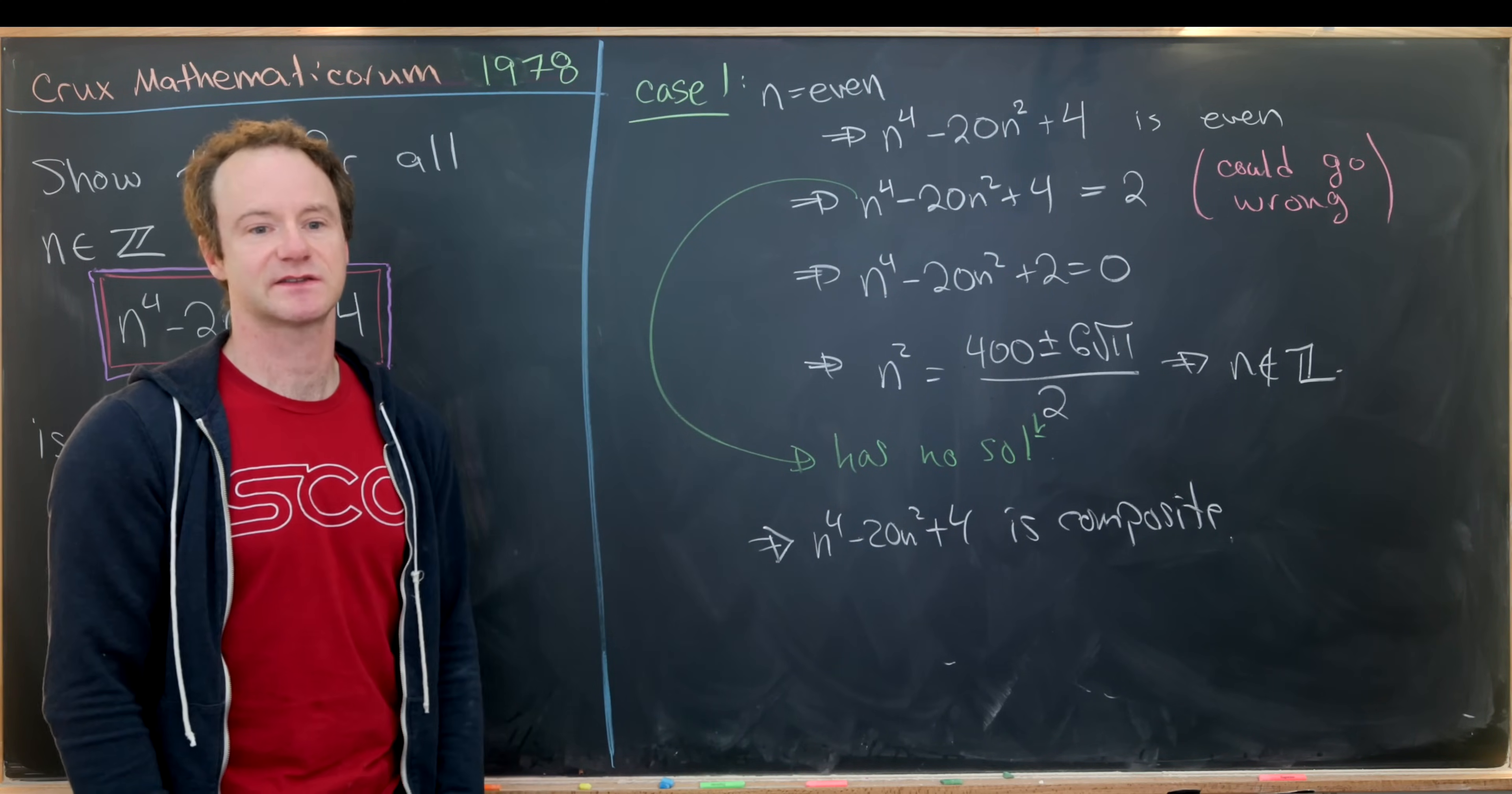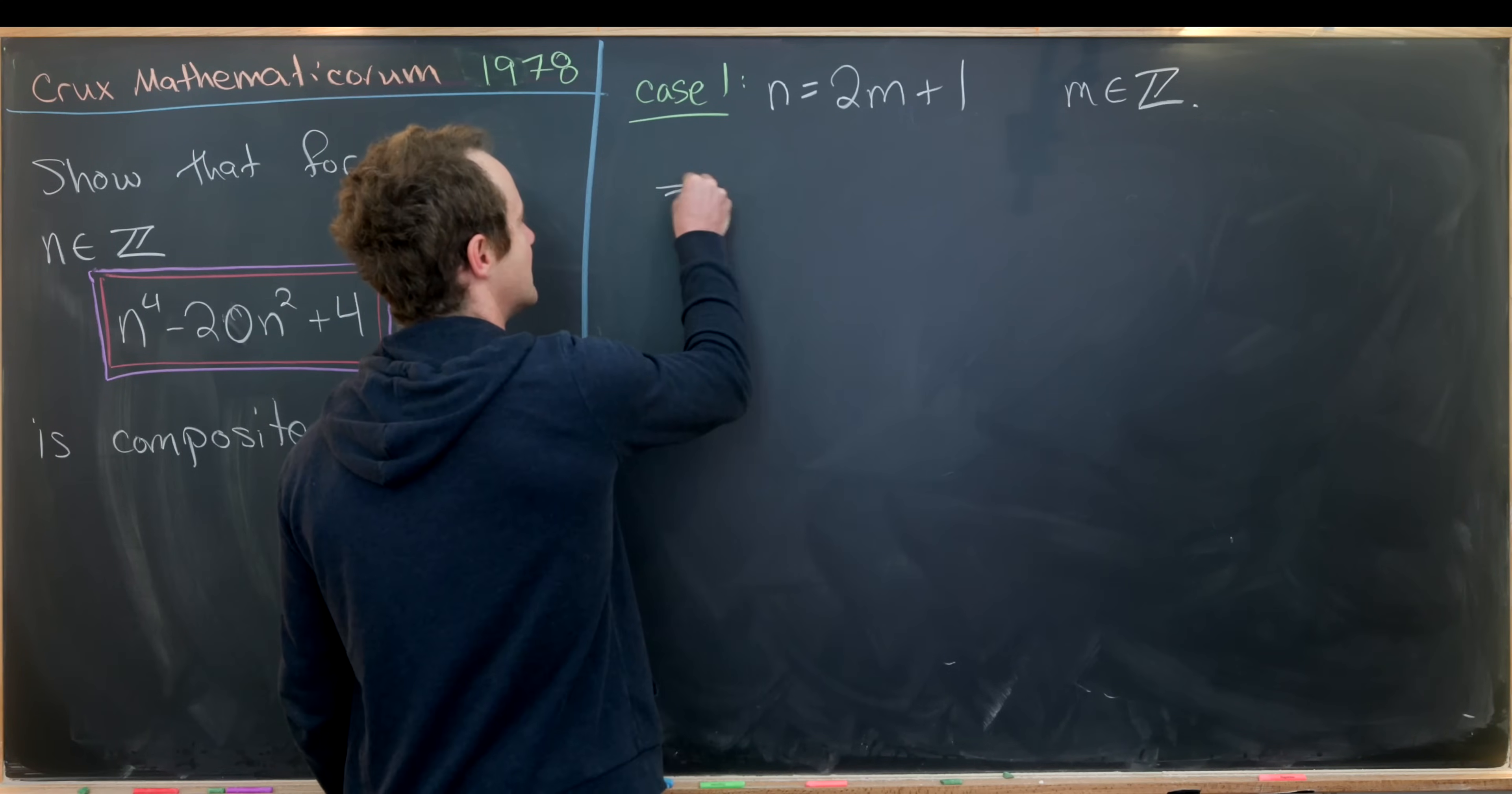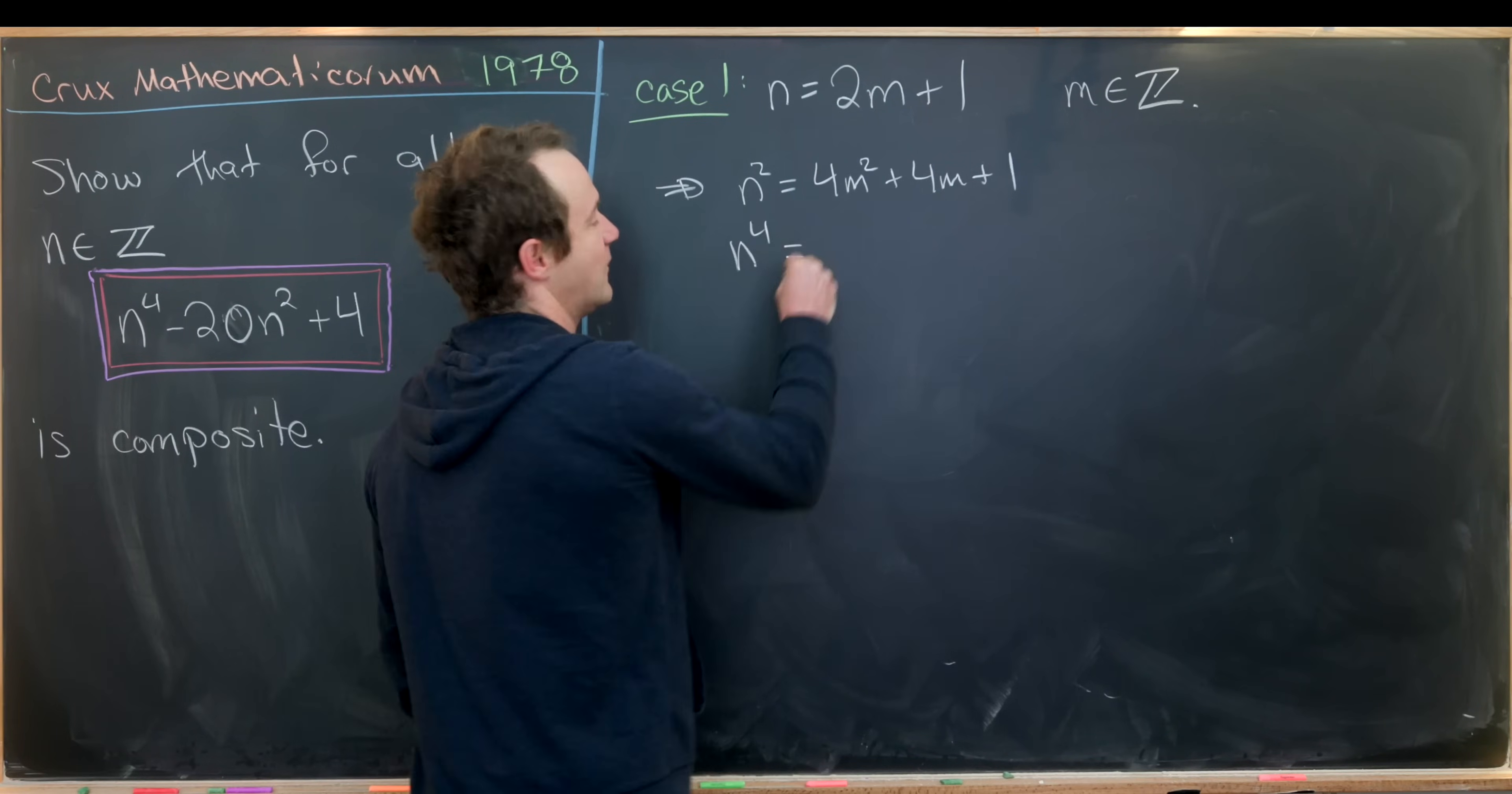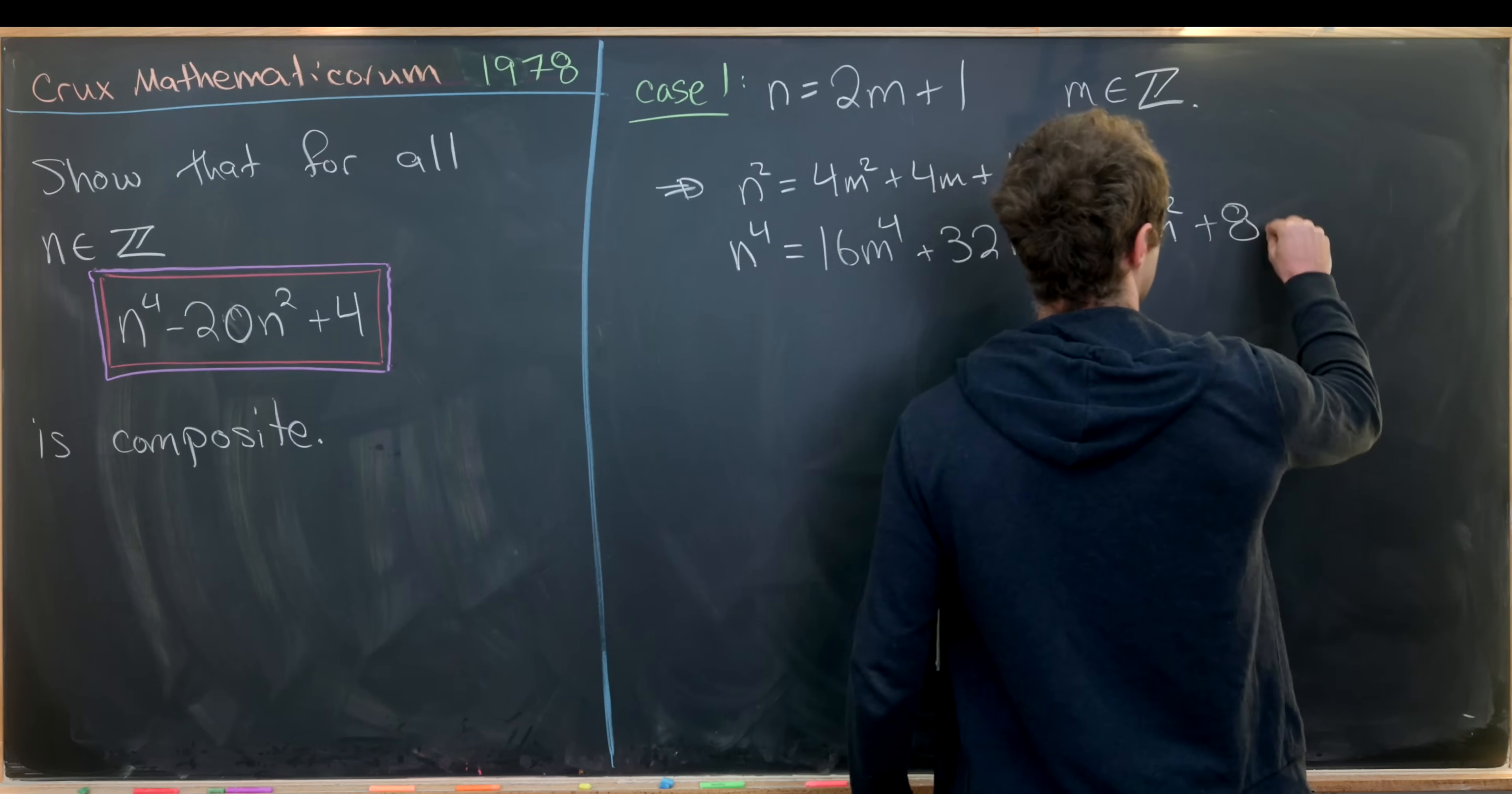The second case is when n is odd. If n is odd, I can write it as 2m plus 1, where m is some integer. It's one more than an even number. If n is 2m plus 1, then n squared equals 4m squared plus 4m plus 1, just by squaring the binomial.